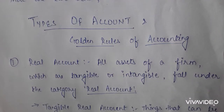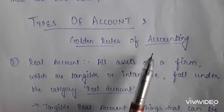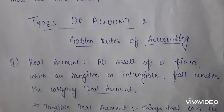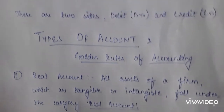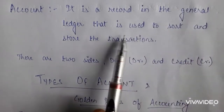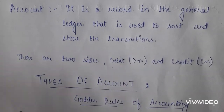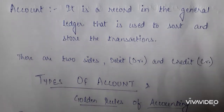Hello friends, good morning. I am Nidhi, and today we are going to start the topic of accounts. In this video we are going to discuss the types of accounts and the golden rules of accounting — the three rules on which the whole of accounting is based, and on which we are going to do our further entries. An account is a record in the general ledger that is used to sort and store transactions. We have a number of transactions, so we need to sort them into different heads, and that is known as accounts.